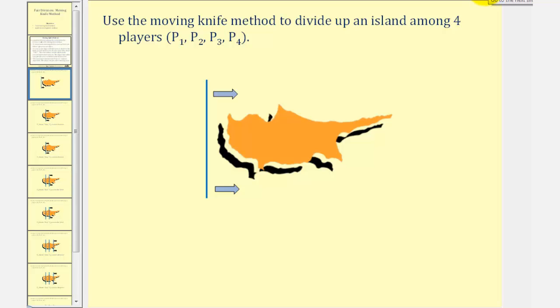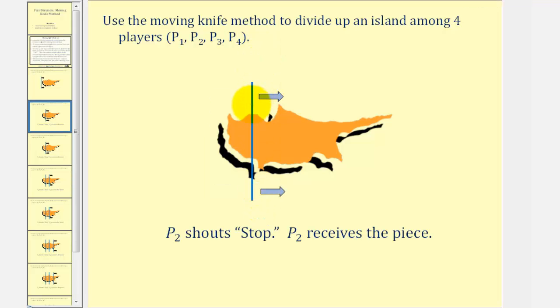For example, as the line reaches this position here, player two shouts stop and therefore player two receives the piece to the left.